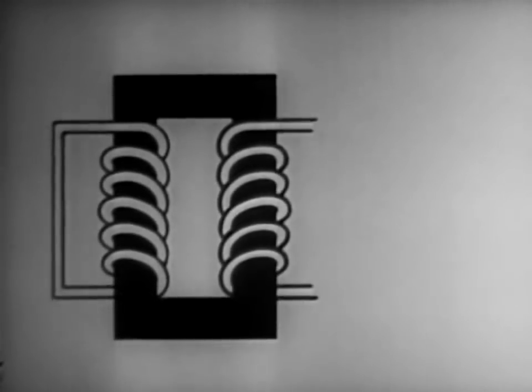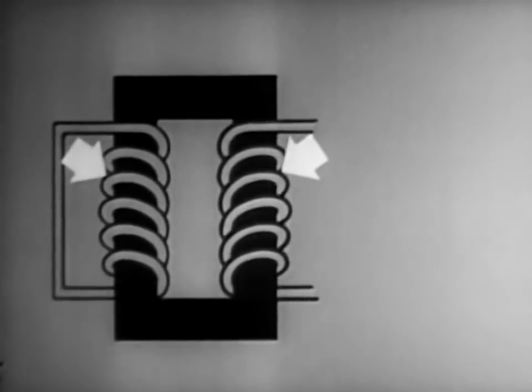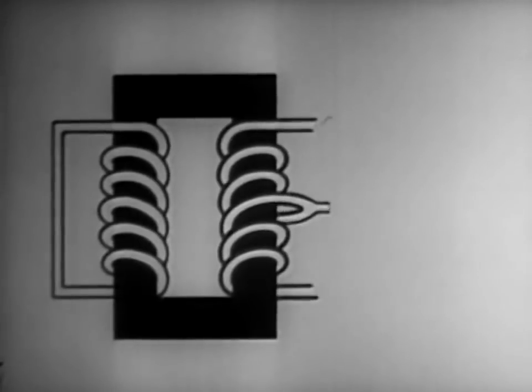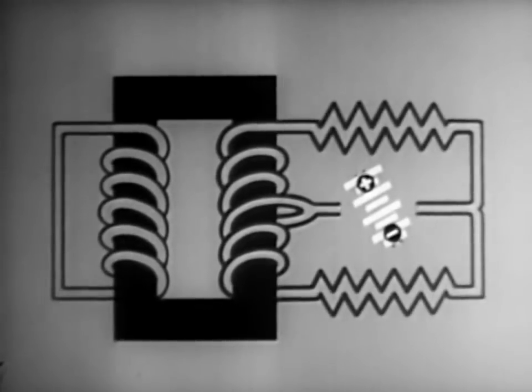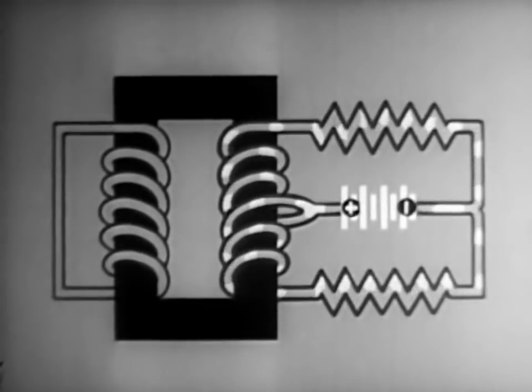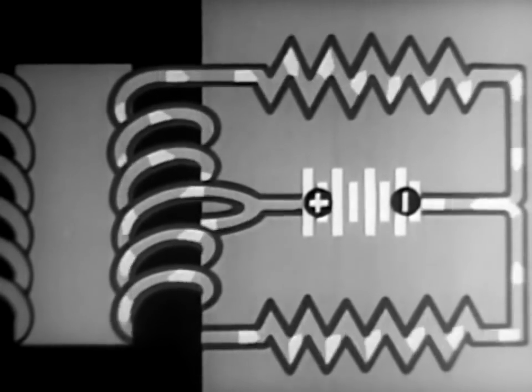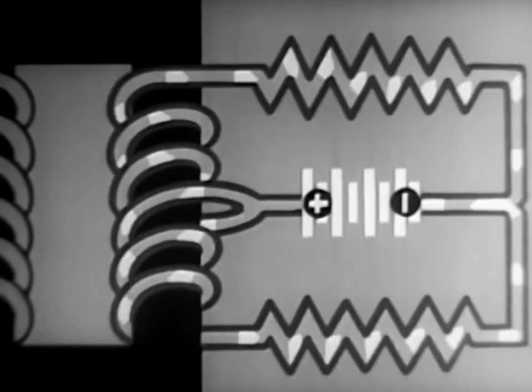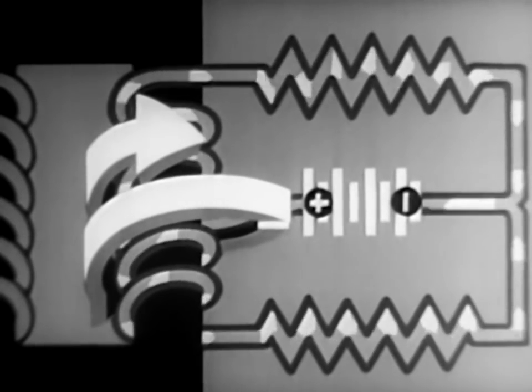So far, so good. But suppose we want current to flow in one winding without producing any effect whatever in the other winding. We can do this by connecting the exact midpoint of one winding to one side of our current source and connecting the other side through equal resistances to both ends of the winding. Now, let's close the circuit and watch the path of the current. Because the resistances are equal, the current divides equally between the two halves of the winding. There are now two equal currents flowing through the winding in opposite directions. Their magnetizing effects cancel each other, so no flux is produced in the core.